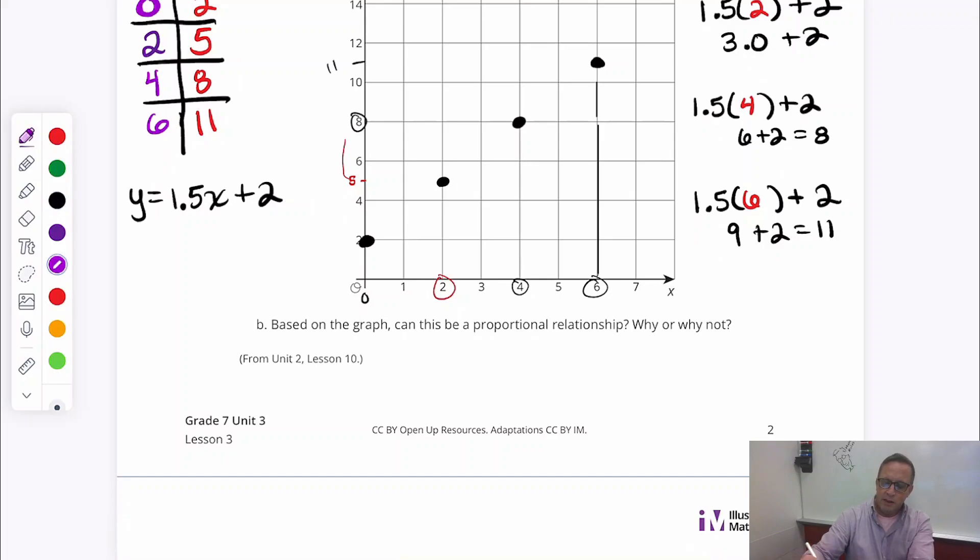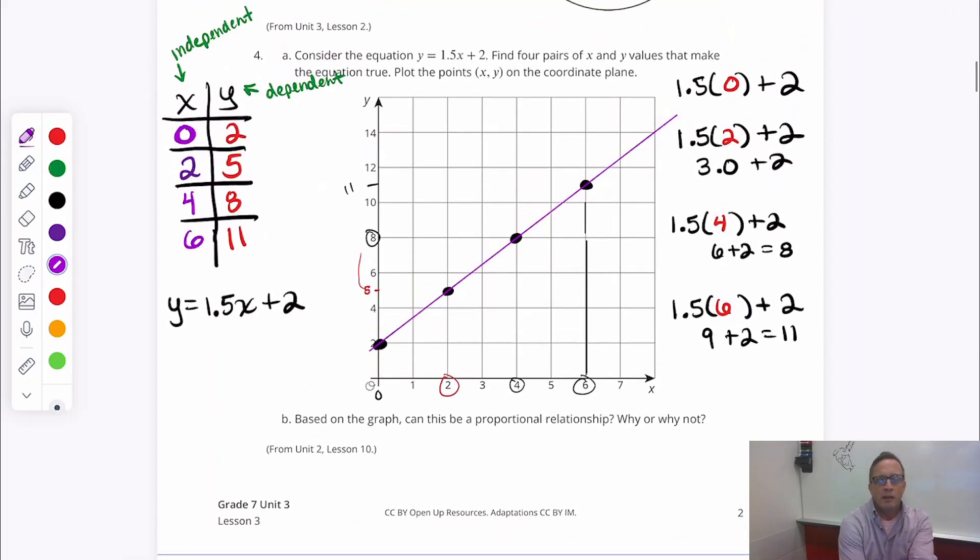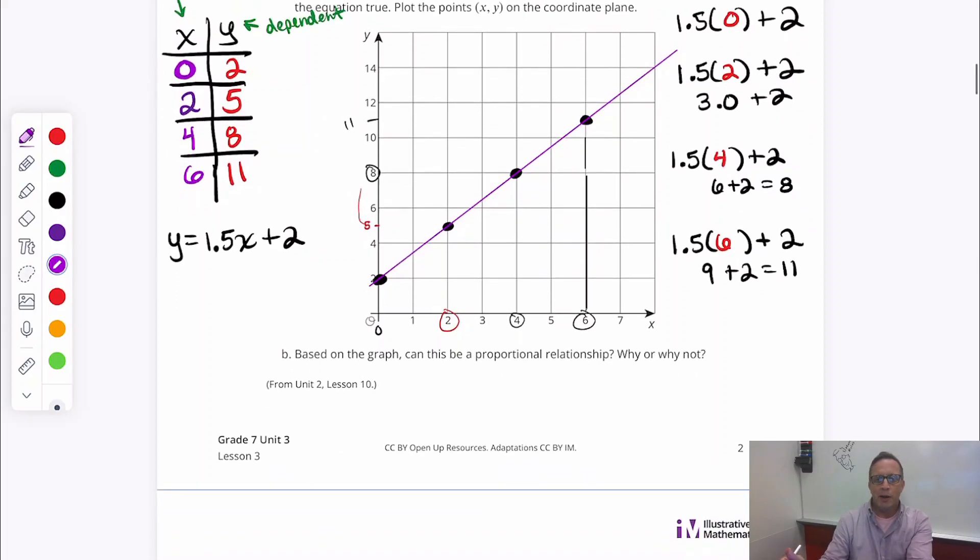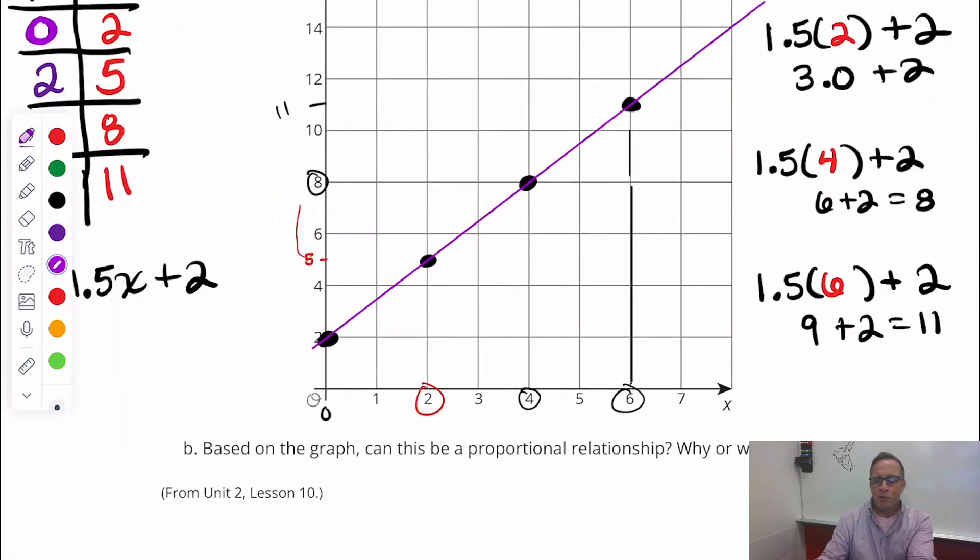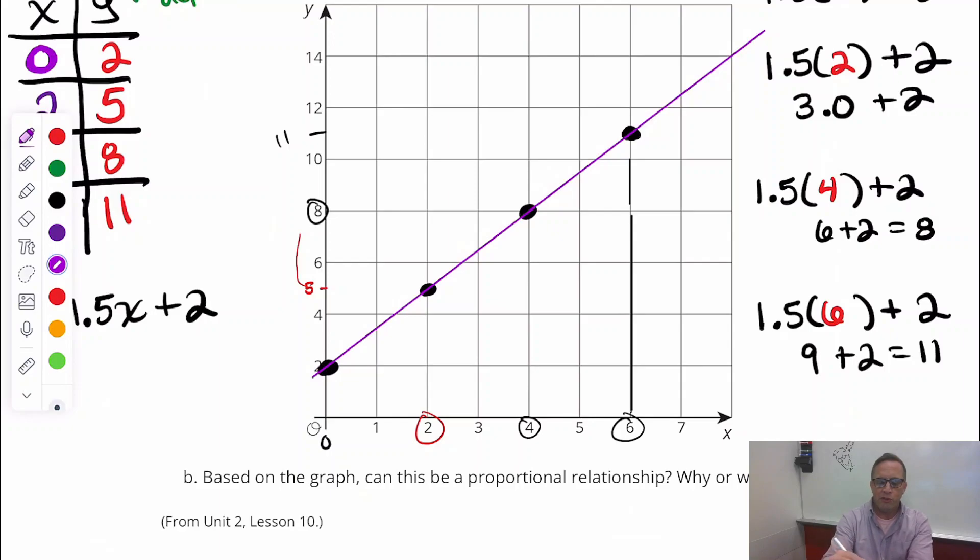All righty. We got it. Okay. Now, I'm going to make a line through it. And, based on the next question, it says, based on the graph, can this be a proportional relationship? Why or why not? Well, I don't see why not. Right? Why not? Because why? Because we said so. Now, that's not a good enough reason. That's terrible reasoning. So, the mathematics that we've learned so far in this series, using this curriculum, we've learned that proportional relationships are linear. Alright. Well, this is definitely linear. Alright. We could draw a line through the points. All these points are co-linear.